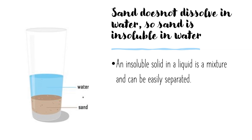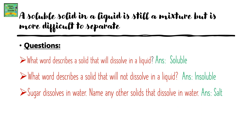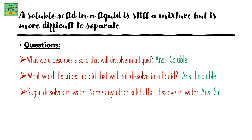An insoluble solid in a liquid is a mixture and can be easily separated. A soluble solid in a liquid is still a mixture but is more difficult to separate.